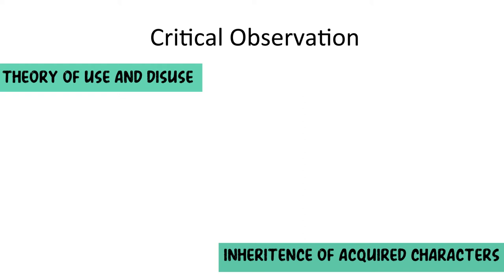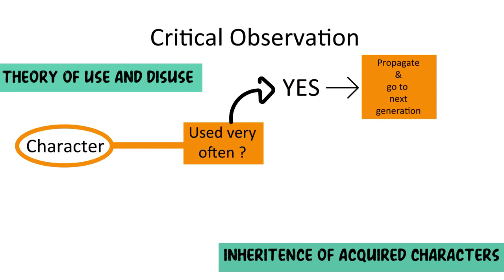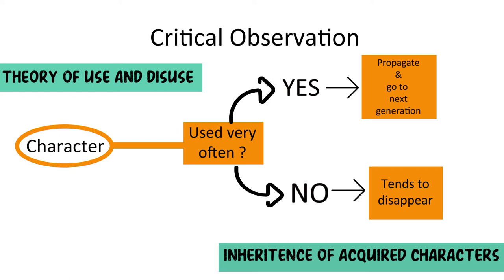The theory of use and disuse and inheritance of the acquired characters revolve around the idea where a character propagates and is positively selected if that character is used more throughout the course of an organism's lifetime. If it is not used so often, the character tends to disappear and subsequent generations never acquire that character.